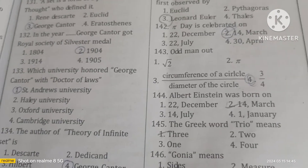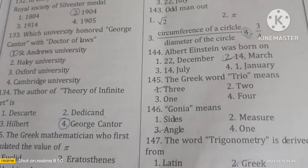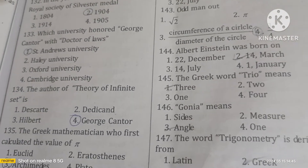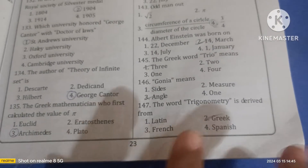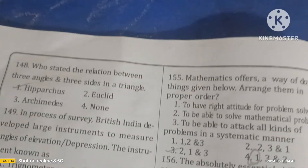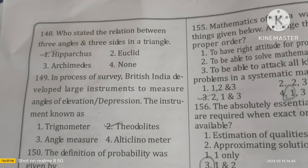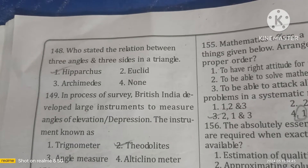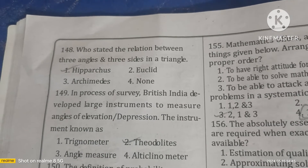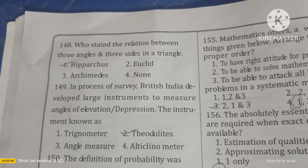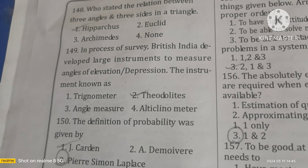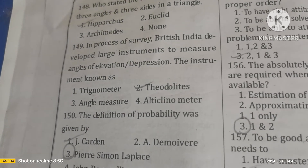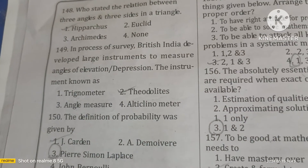The Greek word 'trio' means three and 'gonia' means angle. The word trigonometry is derived from Greek. Hipparchus stated the relation between the three angles and three sides in a triangle. During the survey of British India, large instruments were developed to measure angles of elevation or depression.